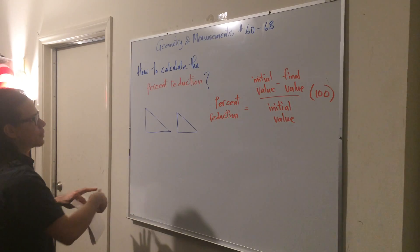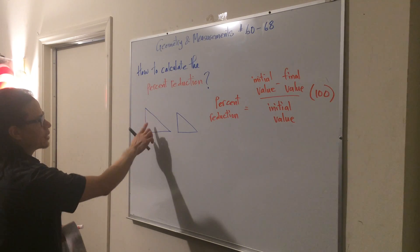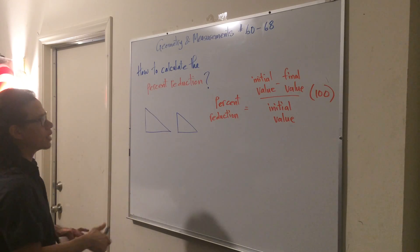In terms of a diagram, the question is asking how much has this triangle been reduced by in order to get to that smaller triangle there.